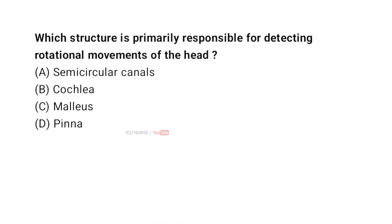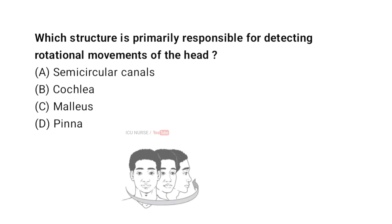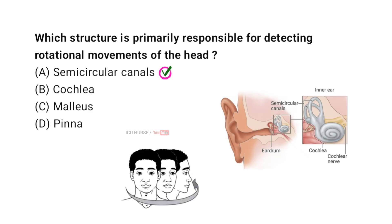Which structure is primarily responsible for detecting rotational movements of the head? A. Semicircular canals, B. Cochlea, C. Malleus, D. Pinna. And the correct answer is A. Semicircular canals.